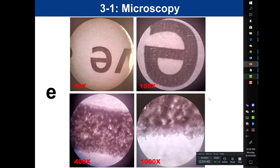On the slide, the E looks like a regular E with the naked eye. However, when viewed at 40x, not only is it inverted vertically but also horizontally — it is upside down and backwards. So when looking at a specimen in a microscope, you have to remember that what you see is actually inverted and backwards compared to what is on the actual slide.